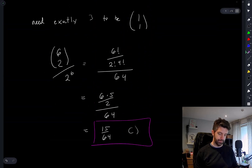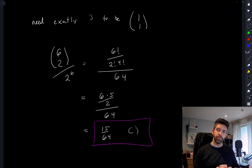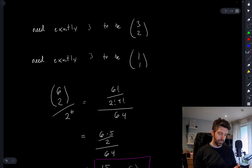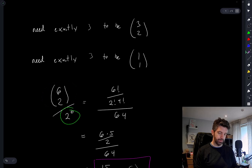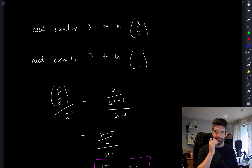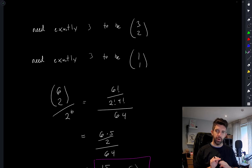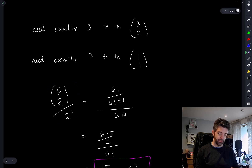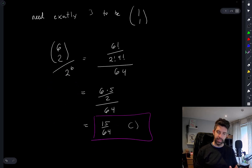I'm confident that this is the correct answer — the number of successful combinations divided by the number of total combinations. Everything is done independently with equal probabilities, so every possible combination is equally likely, and that's why this is the correct ratio. If I have a mistake, I'll let you know. Thanks for watching.